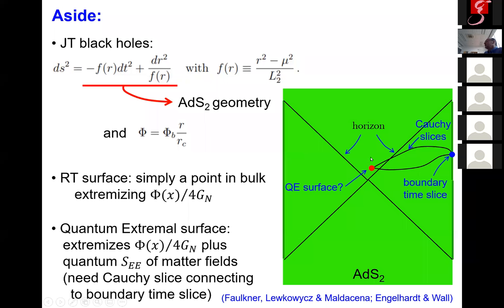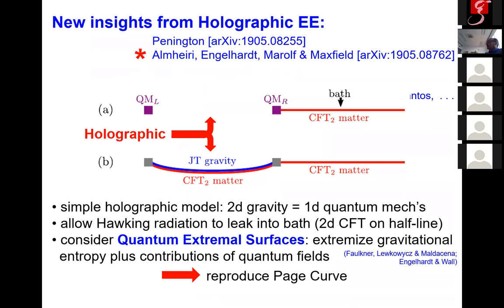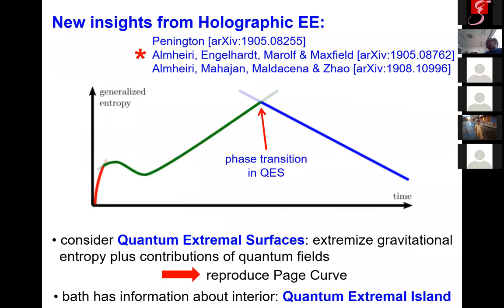The entanglement entropy of the matter fields isn't going to care which Cauchy slice I pick, as long as they're anchored on the same boundary and bulk point. If I move the red dot around to another class of Cauchy slices, the contribution of the matter field changes. Following these authors, the instruction is to extremize the combination of both together. The claim is that in this setting this reproduces something that looks like a Page curve.